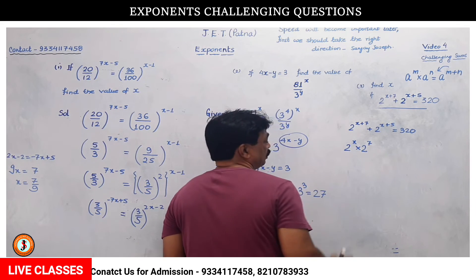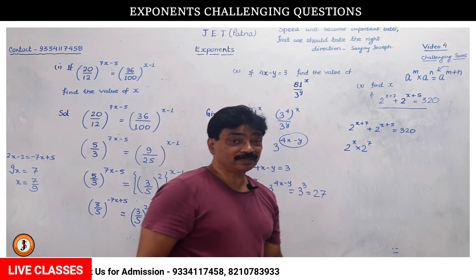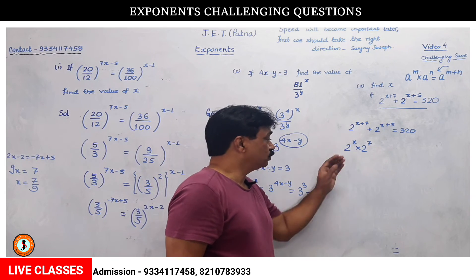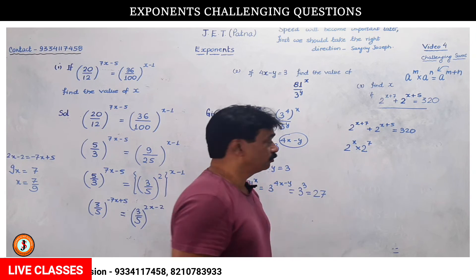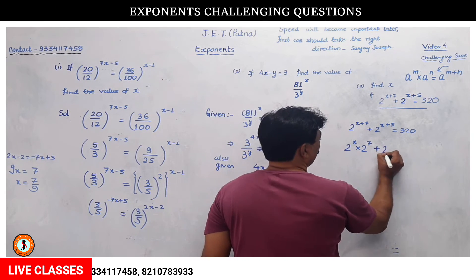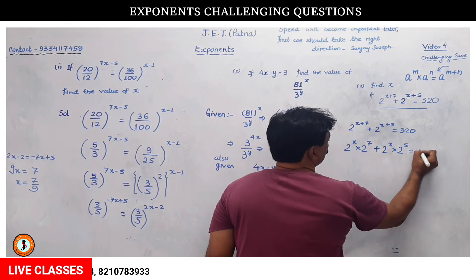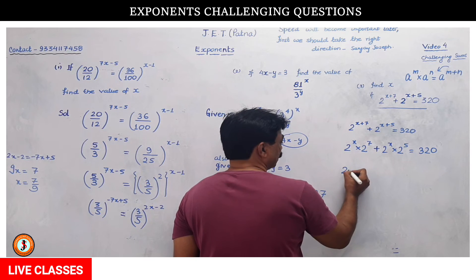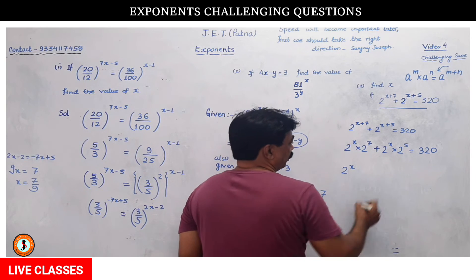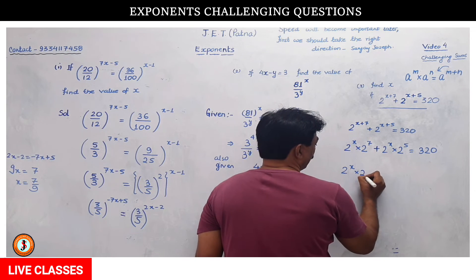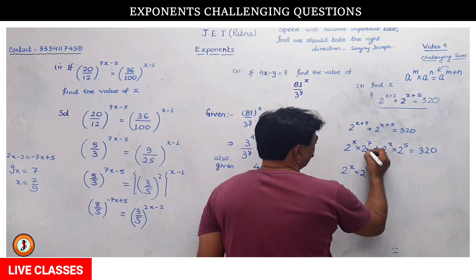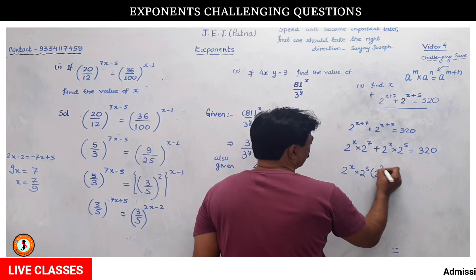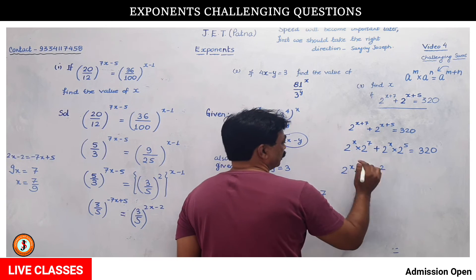Multiplication with same base means 2 to the power x plus 7 is 2 to the power x into 2 to the power 7 plus 2 to the power x into 2 to the power 5, that equals 320. If we take 2 to the power x common and also take 2 to the power 5 common, then inside we'll have 2 squared remaining. So 2 to the power x times 2 to the power 5, this gives 2 squared plus 1.